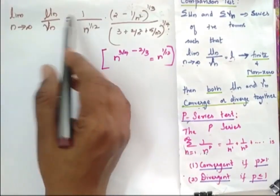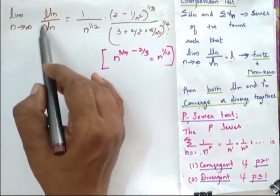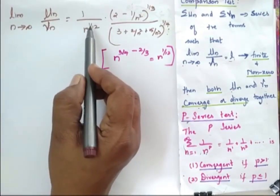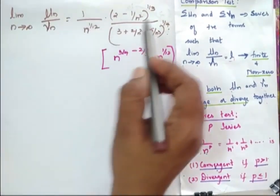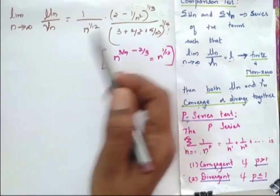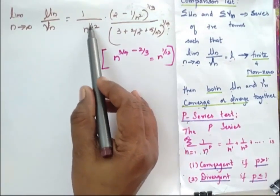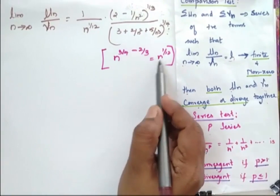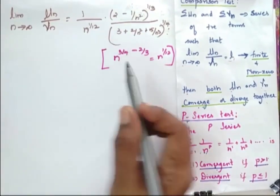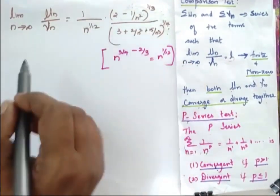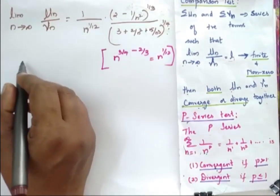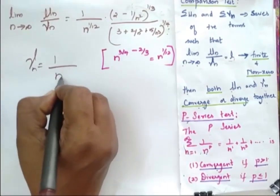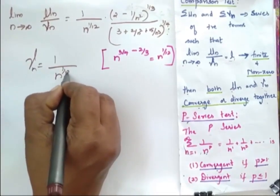When I simplify the limit of u_n/v_n, I get 1/n^(1/12) times this remaining term. This 1/n^(1/12) is obtained when I subtract the powers 2/3 and 3/4, giving 1/12. So since I have this form, I consider my v_n as 1/n^(1/12).